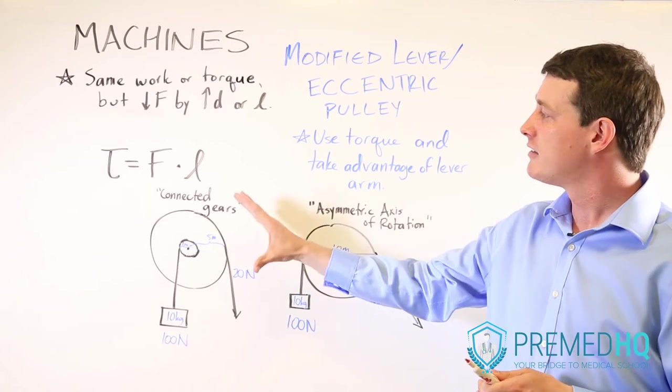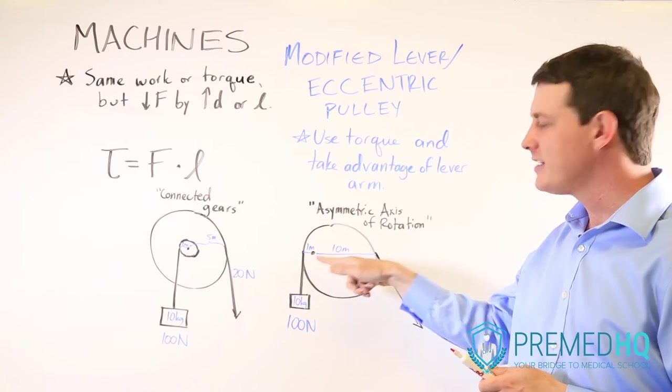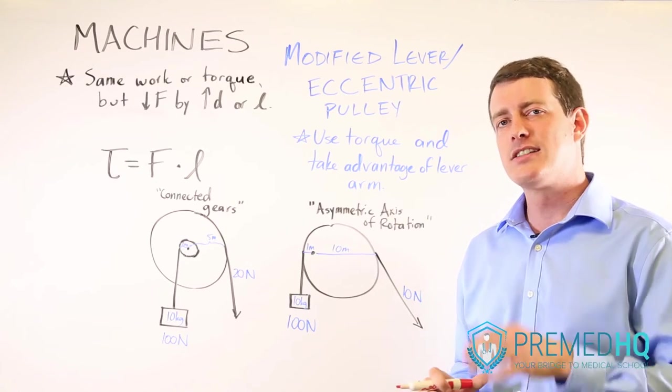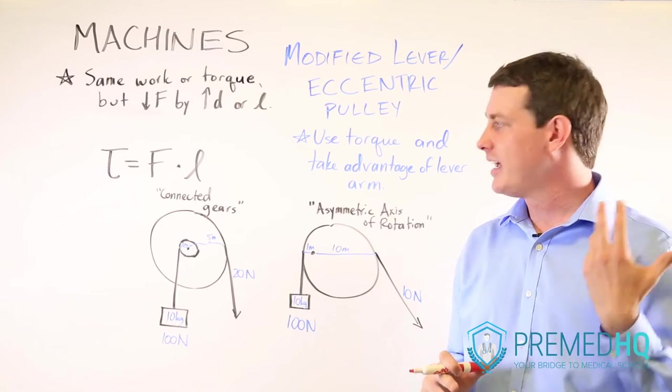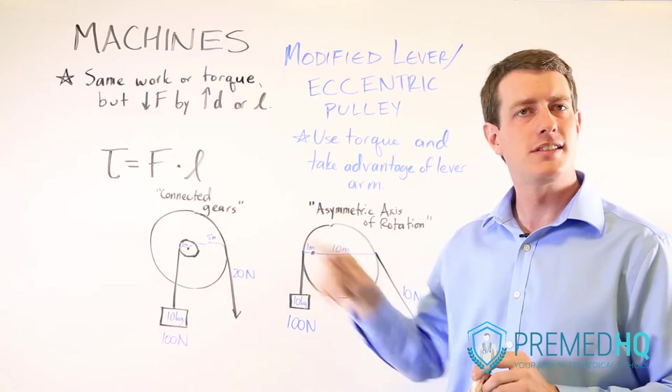And so whenever you see either of these two systems, either connected gears or a pulley with an asymmetric axis of rotation, the first thing you should think is that you need to analyze this as a lever, where you're looking at torque equaling force times lever arm.